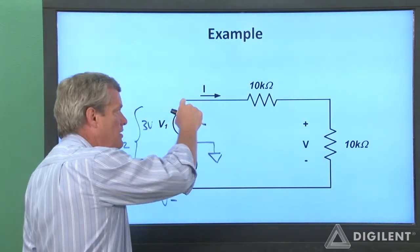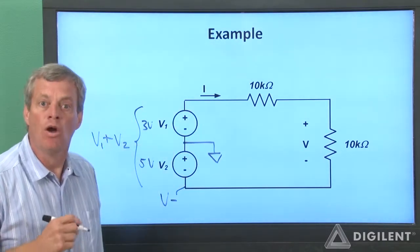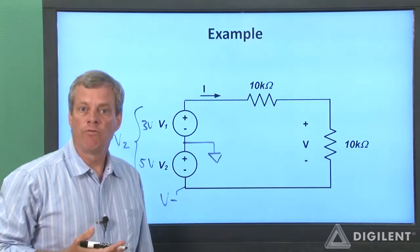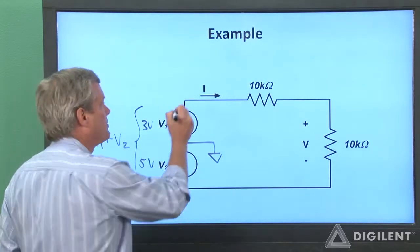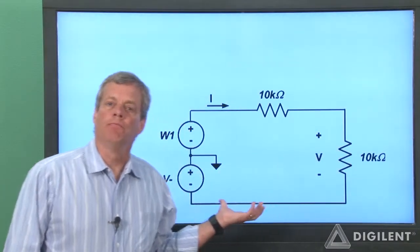This node here is 3 volts above ground, so we need to apply positive 3 volts here. We can use either channel on the waveform generator to do this. I'll arbitrarily pick channel 1. So this is the circuit we're going to actually implement.